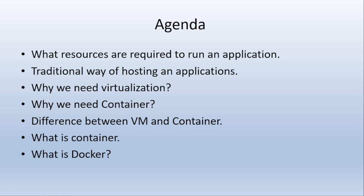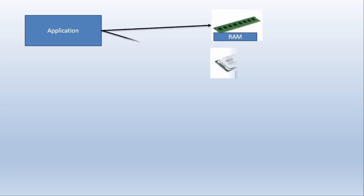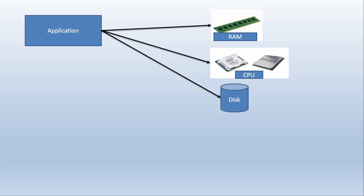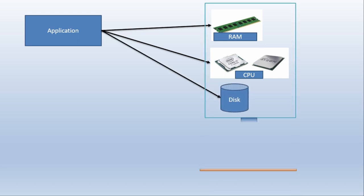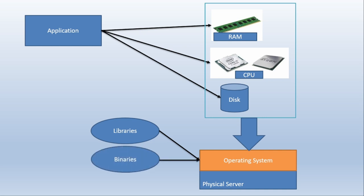Let's move ahead to our first topic: what resources are required to run an application. For any application to run — whether it is nginx, node.js, or any application — it requires RAM, CPU, and disk. The application demands these resources from the operating system, whether the OS is installed on a physical server or in a virtual machine. These OS environments have library and binary files; library files are used by the application and binary files are used by the CPU.